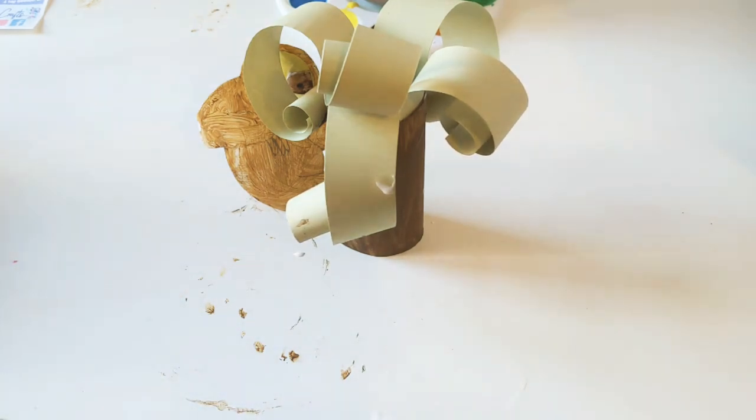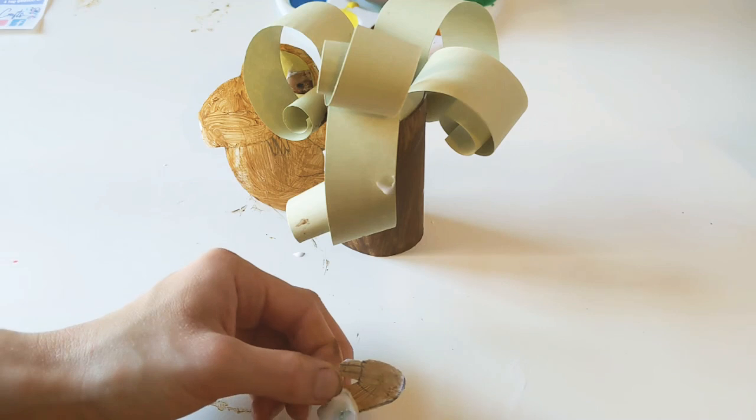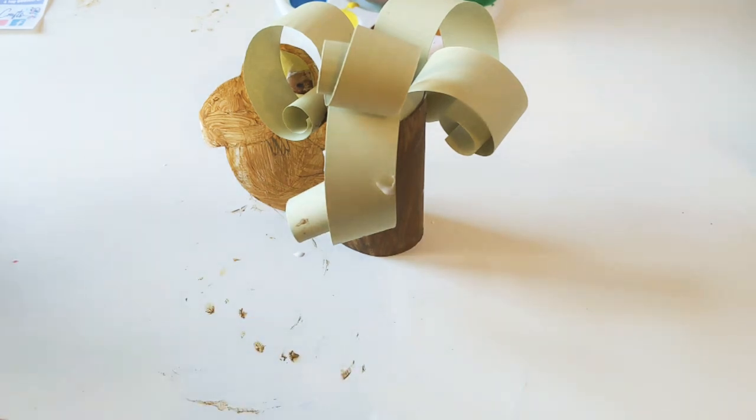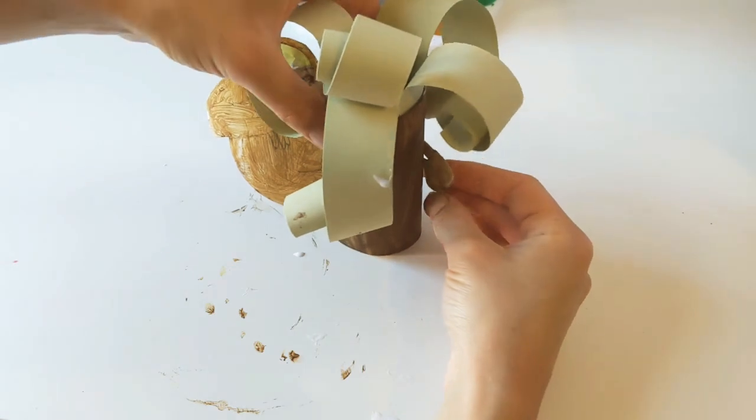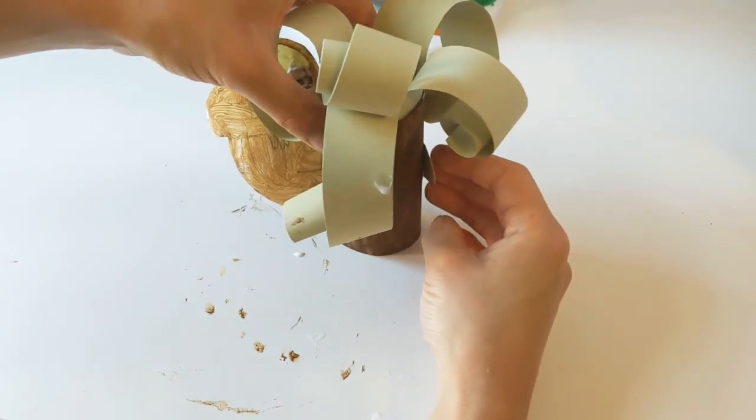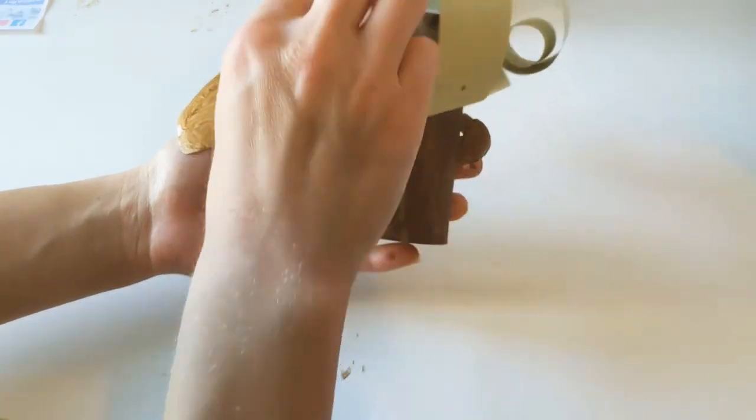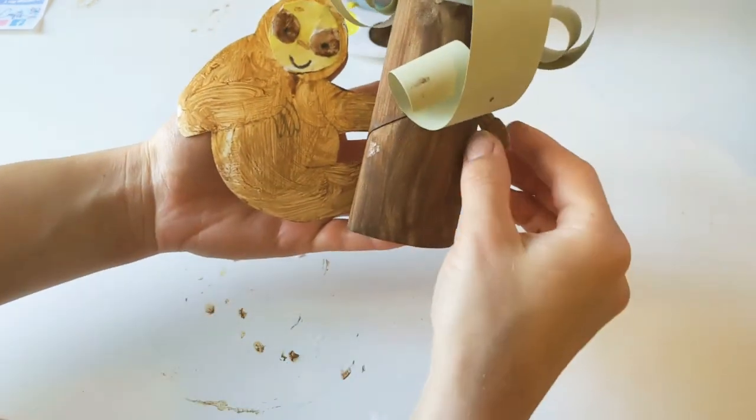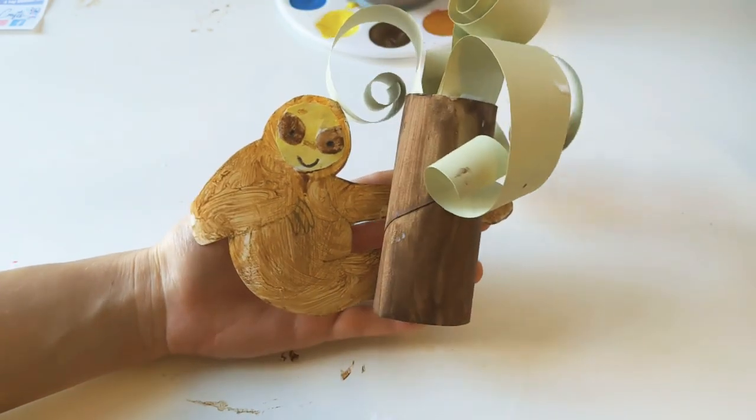And then this little claw piece, it just comes round the other side so that's what's helping him hold on. So again we're just going to pop a little bit of glue just on the end of his arm here. And then we can stick that one on there like so. So if I dip him down just so you can see, this is what the finished little Sid the Sloth will look like.